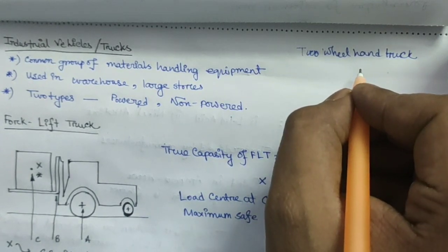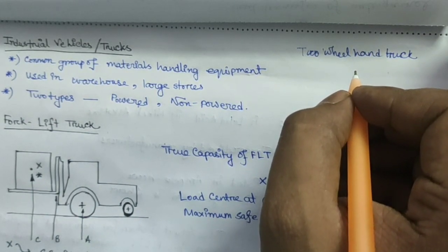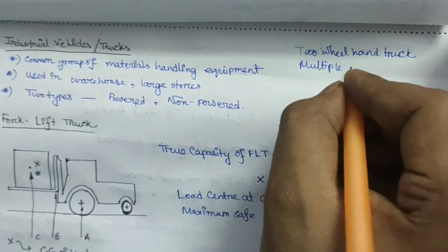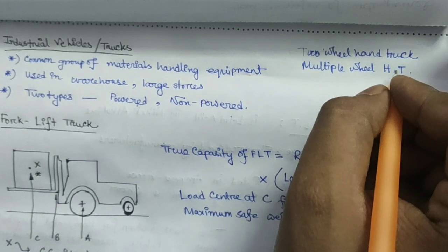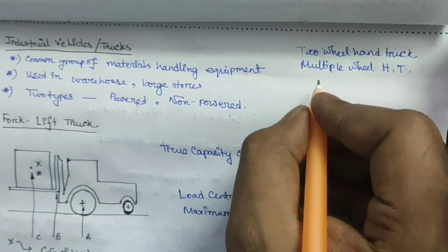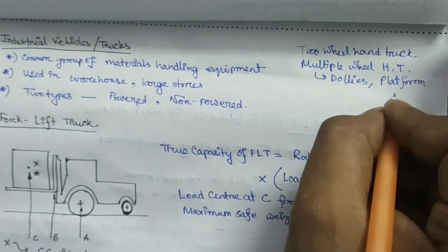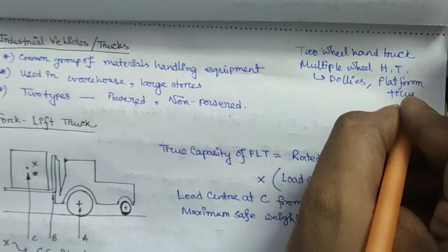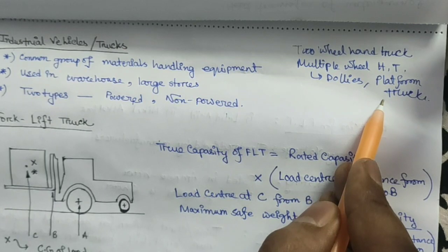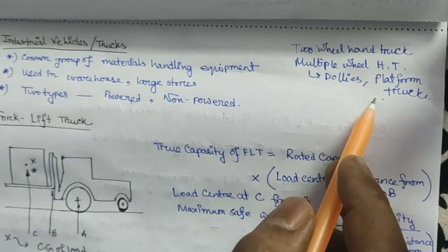The two-wheel hand truck is used for moving unitized loads like bags, barrels, boxes, and cartons. The multiple-wheel hand truck includes different sets of hand trucks such as dollies or platform trucks. Platform trucks are differentiated into two types: the tilt or balance type, and the non-tilt or rigid type. There is also another type available — the semi-live skid platform truck.